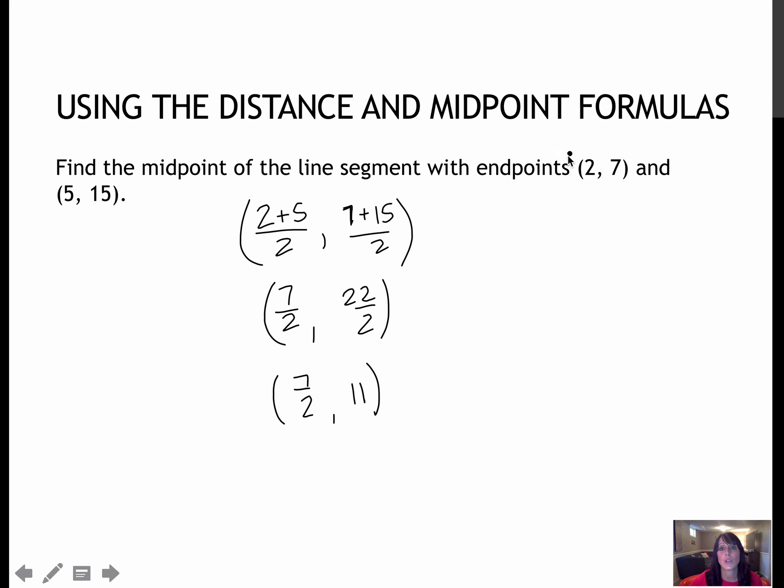So if I graph those two points, you can do that on Desmos, you can find those two points and then plot this point (7/2, 11), and they should all be the same distance from 7 halves comma 11. Both of those points are the same distance from that midpoint.